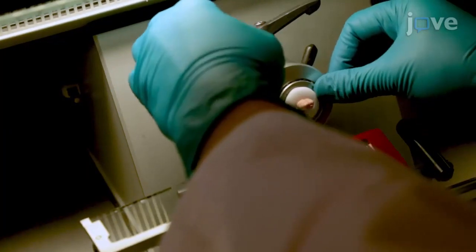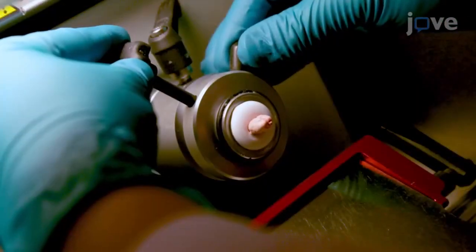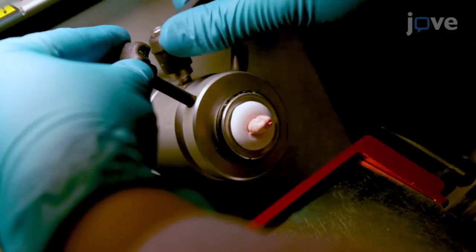Position the tissue holder in the microtome of the cryostat. Adjust the orientation of the tissue to avoid sloped sections.